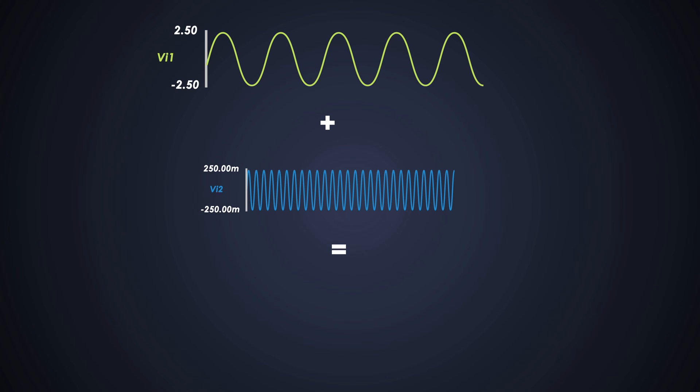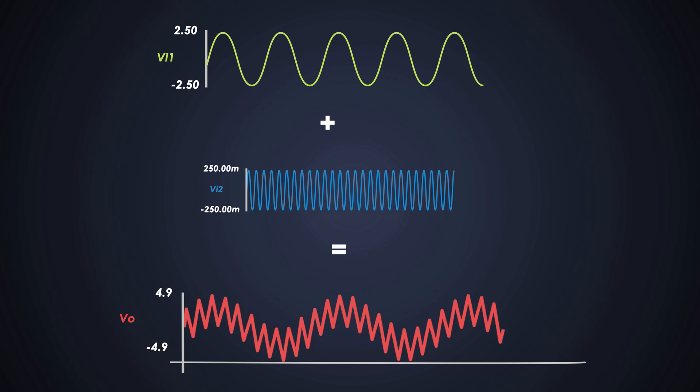When we do inverting summation of this signal, this is how it should look like. The frequency of this signal will be 10kHz and its amplitude will go from minus 4.9V to 4.9V. That's what we want from this circuit.